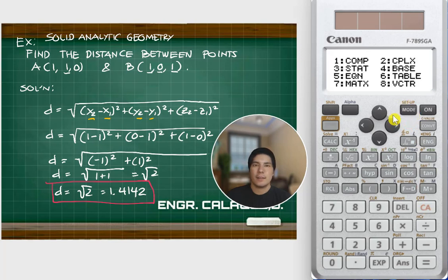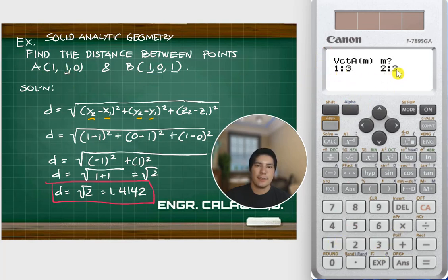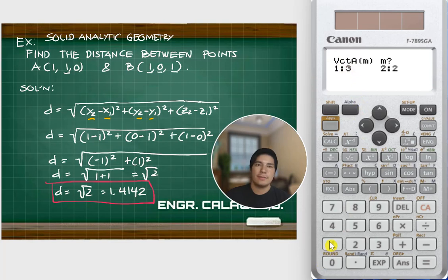To use the calculator, go to Mode then 8. We are given vectors, so we just need to use 2 vectors here — vector A and vector B. We'll need 3 components, since we have 3 dimensions: x, y, and z. We have 1, 1, 0 for vector A.